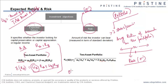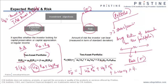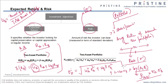The dispersion around the mean is called risk, standard deviation, or sigma. For a two-asset portfolio, the standard deviation is the square root of: W_A squared times sigma_A squared, plus W_B squared times sigma_B squared, plus 2 times W_A times W_B times the covariance of A and B. The covariance can be expanded as the correlation between A and B times sigma_A times sigma_B. The portfolio standard deviation is always less than or equal to sigma_A plus sigma_B.